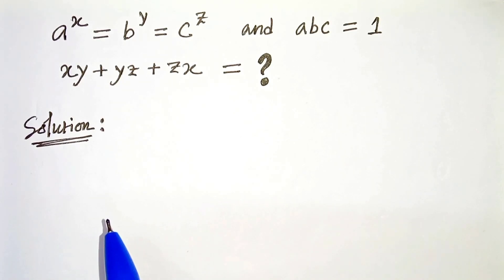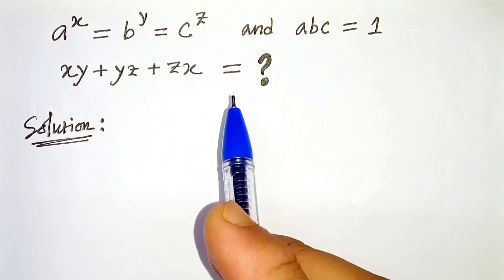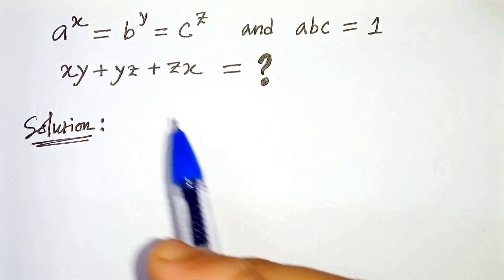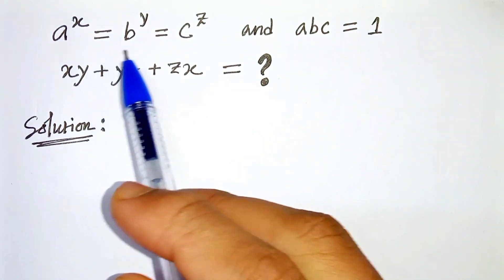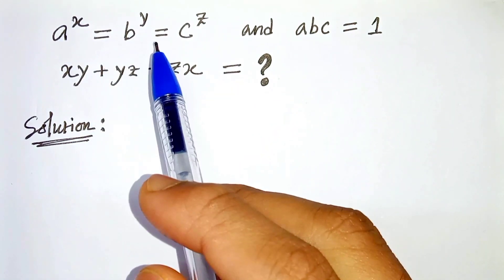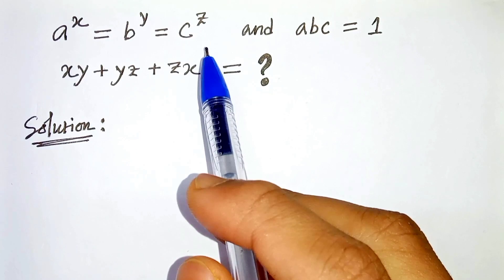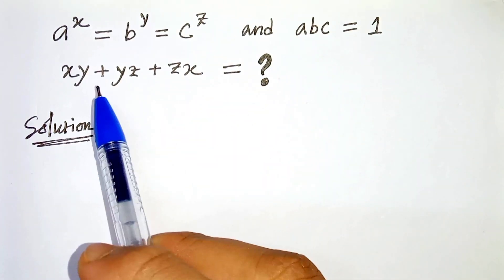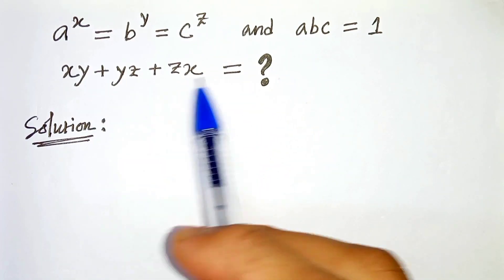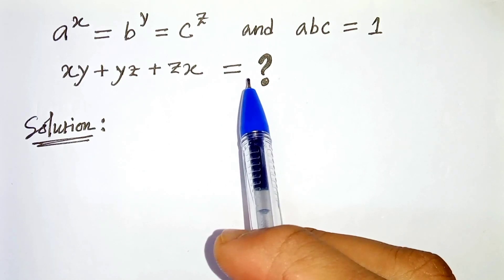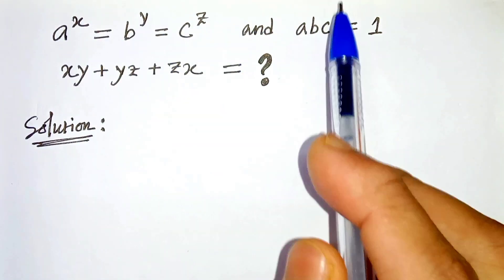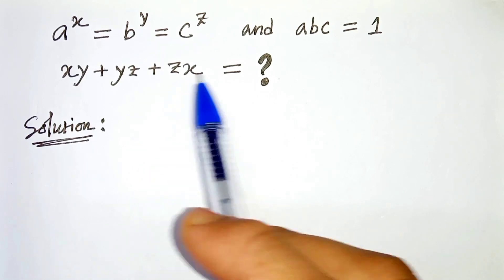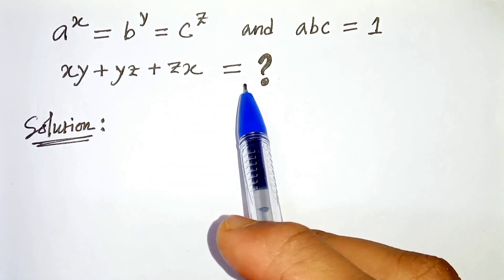Hello everyone. In today's video we have this algebraic problem. The question is: a raised to the power x equals b raised to the power y equals c raised to the power z, and abc equals 1. So we have to find xy plus yz plus zx. We have given these two conditions and we have to find xy plus yz plus zx. Let's start.